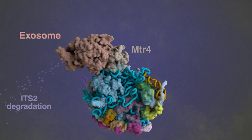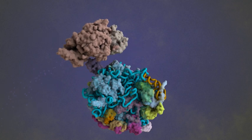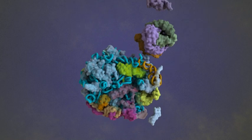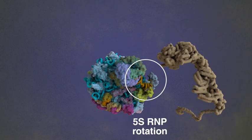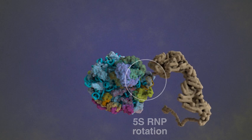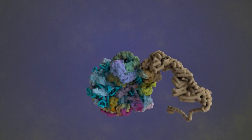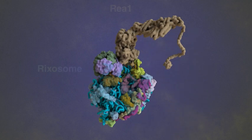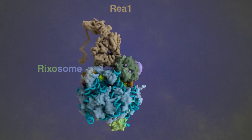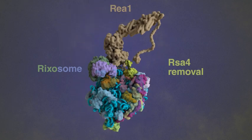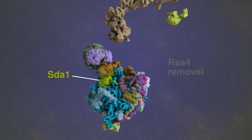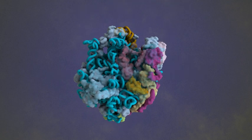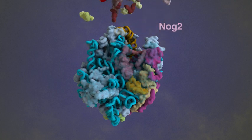After ITS-2 processing is complete, all foot factors are dislodged from the pre-60S. Next, the 5S rMP rotates into its mature position, and RPF-2 RRS-1 dissociates. These events are triggered by the recruitment of the RICS-1 complex and the RIA-1 ATPase. RSA-4 is removed by RIA-1, and the pre-60S is left with a characteristic structure called the central protuberance.